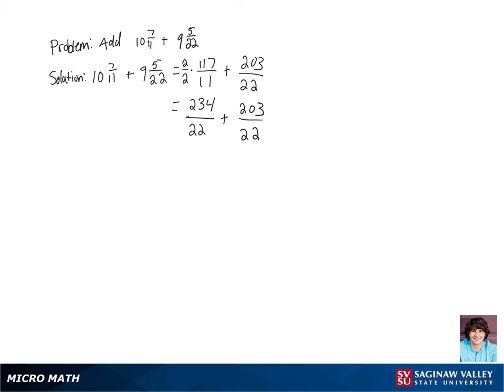Now we can just add the numerators here and keep our denominator, and we're going to get 437 over 22.